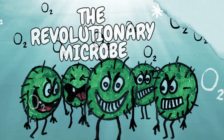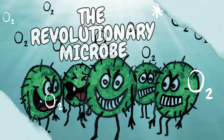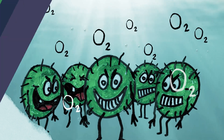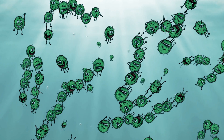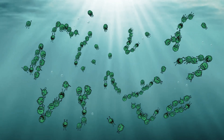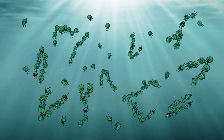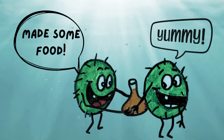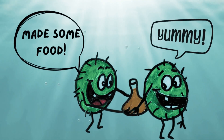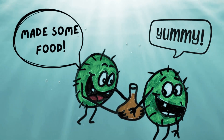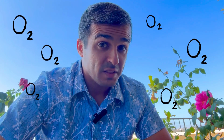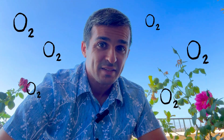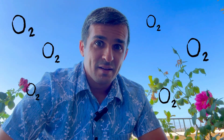The heroes of our story are the cyanobacteria. These microscopic organisms were different from their anaerobic peers that were dominant on the early Earth. Cyanobacteria had a unique, revolutionary trick — they could use sunlight to create their own food through photosynthesis. It was a radical idea that unlocked a new source of energy for life on Earth, but there was a by-product to this process: oxygen.